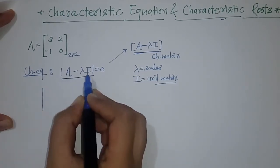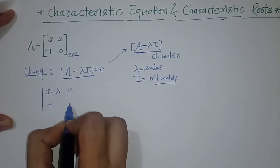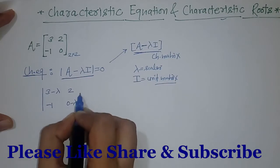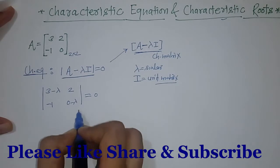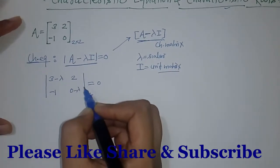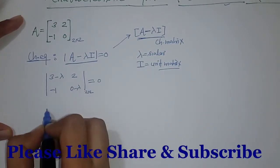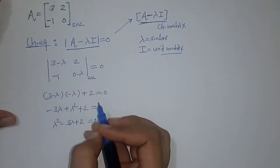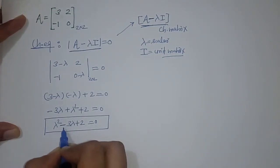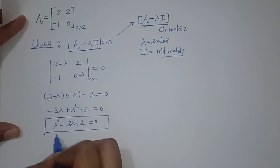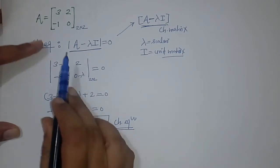We then compute the determinant of A minus lambda I. By putting in all the values and solving this 2 by 2 determinant using cross multiplication, we get an equation in lambda. This is the characteristic equation for matrix A.